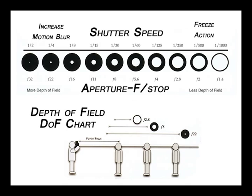As you move from f2.8 to f8 to f22, your range of focus gets deeper and you move more into infinity focus. If you do not have control over your aperture, for example on a point-and-shoot camera, there are still settings you can use. An f2.8 is more similar to the macro setting, a normal setting is more like f8, and then there's an infinity focus setting represented by the symbol of a mountain.